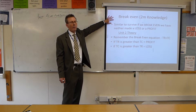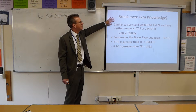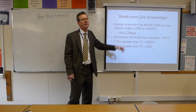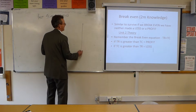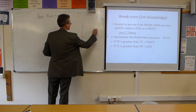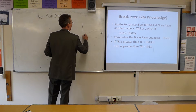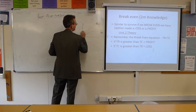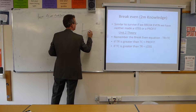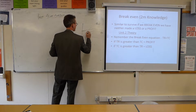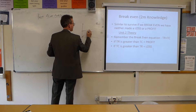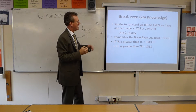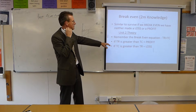You could have a two-mark question asking: what is the objective of breakeven? From Unit 2 theory, you know that breakeven involves your fixed costs and your sales revenue line. The breakeven point is the point at which a profit is either made or a loss made.